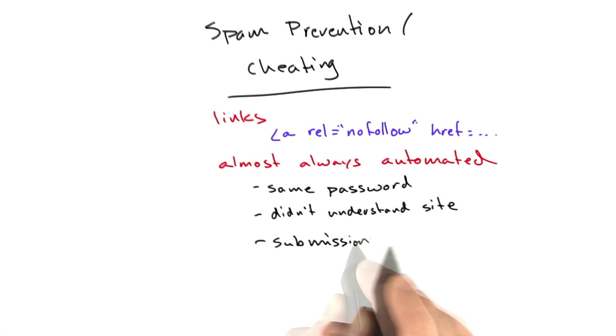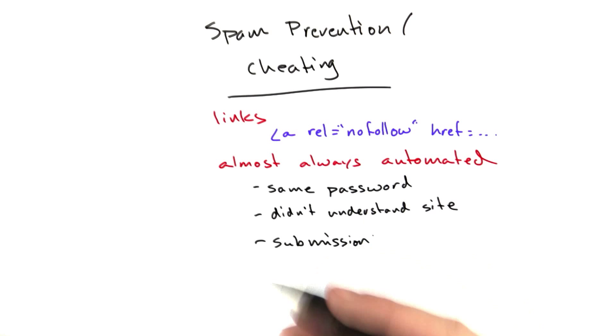Submission rate. This is another heuristic. Legitimate users didn't submit that often. Or if they did, the time between submissions was staggered, and spammers would often just submit a bunch of links at the same time. We'd look for those signs and ban the links.